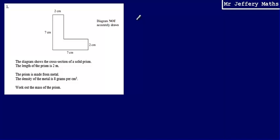Welcome to a series of videos taking a look at the Edexcel practice papers. This is question one from the higher tier of the second set of practice papers. The diagram shows the cross-section of a solid prism. The length of the prism is 2 metres. The prism is made from metal and the density of the metal is 8 grams per centimetre cubed.